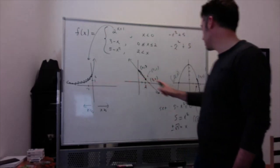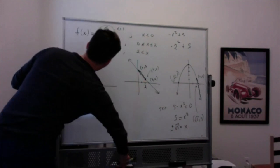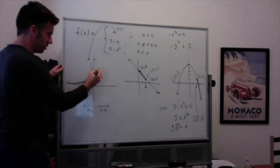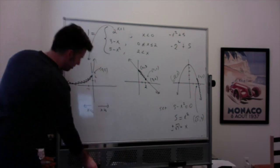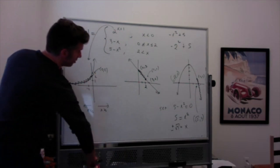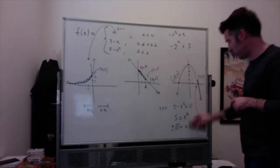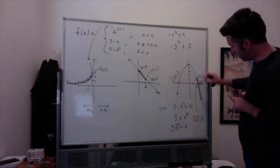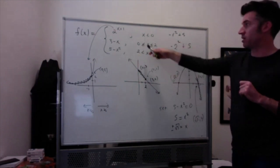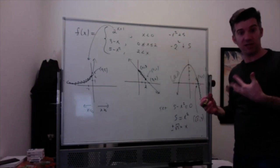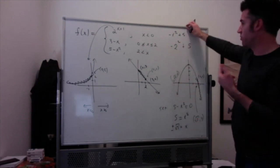Now putting it all together. For 2 to the x plus one where x is less than zero, we can't include the point (0, 2) — it becomes an open circle. Similarly, for five minus x squared where x is greater than two, we can't include (2, 1) — also an open circle. The rule: strictly greater than or strictly less than gives open points; greater than or equal to or less than or equal to gives filled-in points.